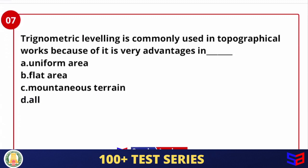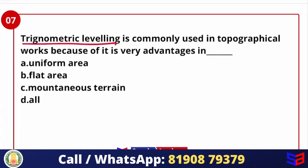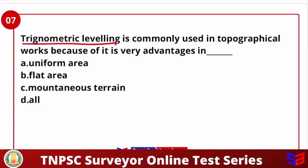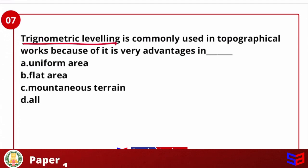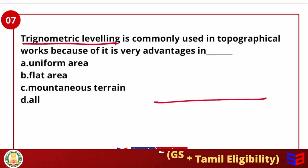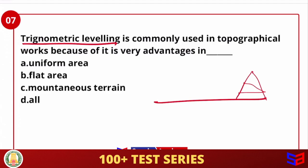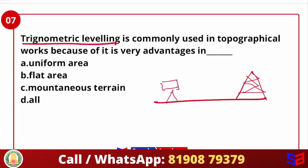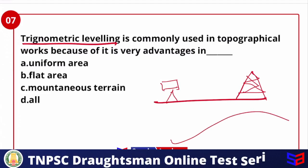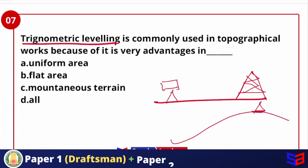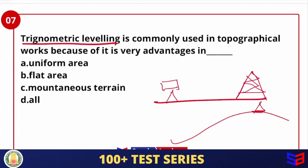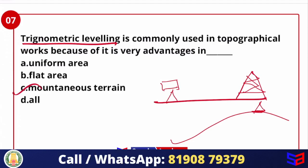Next question: 'Trigonometric leveling is commonly used in topographical work because it is very advantageous in which type of area?' In trigonometric leveling, measurements are performed using vertical angles and base distances — for example, measuring the height of a tower or building where direct leveling is difficult. It is most useful where the terrain is steep or rugged. The options are uniform area, flat area, mountainous terrain, or all. The answer is option C: Mountainous Terrain.